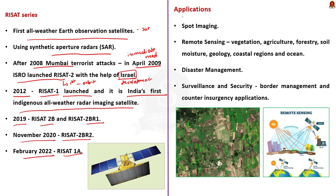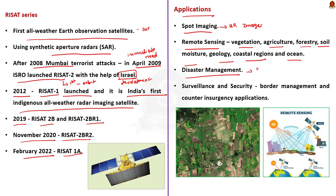RISAT applications include spot imaging for high-resolution imaging of locations of interest; remote sensing to monitor vegetation; agriculture to monitor crop health; monitoring forestry, soil moisture, geology, coastal regions and oceans. It also supports disaster management — during emergencies, the high-resolution all-weather imaging capabilities can be utilized for disaster management support. Finally, for surveillance and security, the all-weather imaging capabilities are used for border management and counter-insurgency applications, such as providing views of terror camps and bunkers.